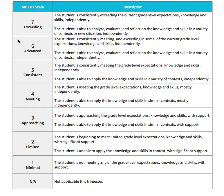A 5 means you're understanding very well on your own. A 6 means you're trying your best to push yourself a little further to extend your learning. A 7 means you're working at the next level beyond your own. And N/A means it wasn't something assessed this trimester.